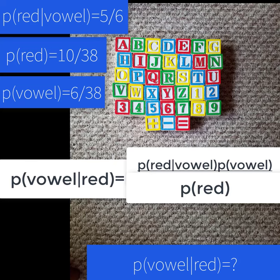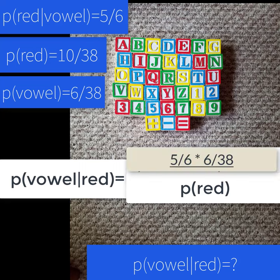So just plug in the values that we know and you get the probability of red given a vowel is 5 over 6 times probability of a vowel is 6 over 38. Divide that all by the probability of red is 10 over 38.